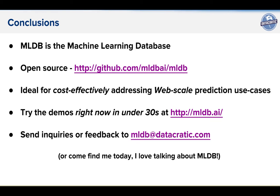In conclusion, MLDB is the machine learning database. It's open source. I strongly encourage you to try it out — it's available on GitHub. It's ideal for cost-effectively addressing web scale prediction use cases. You can try the demos right now. It takes about 45 minutes to compile on a 32-core machine, but we have instances running. Just go to MLDB.ai — you don't have to pay anything. Click and you can be playing with it in 30 seconds. Please feel free to send inquiries or feedback to mldb@datacratic.com, or just come find me. Thanks very much.